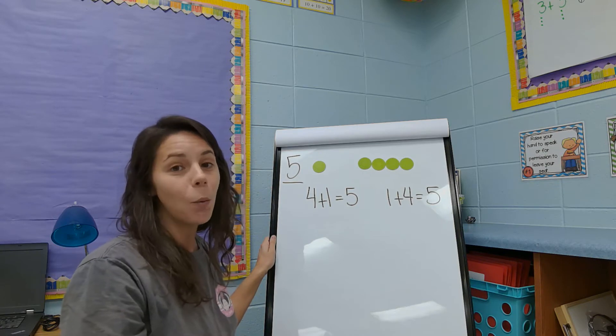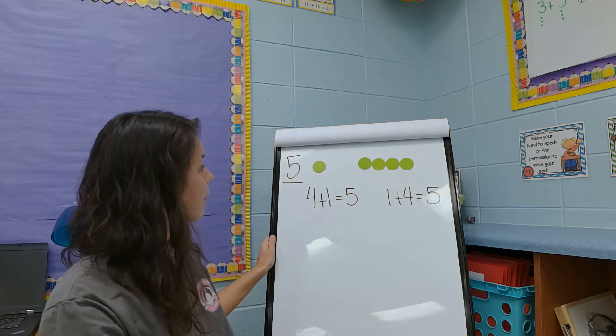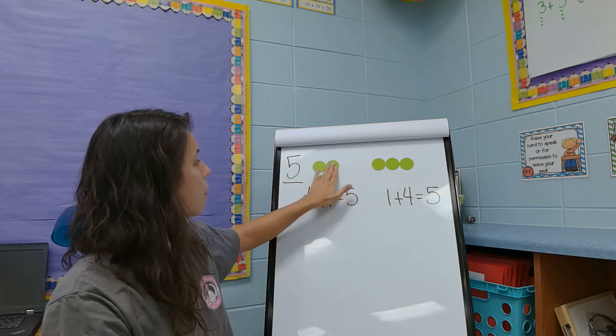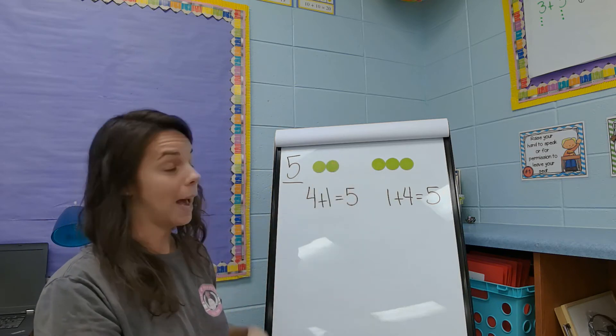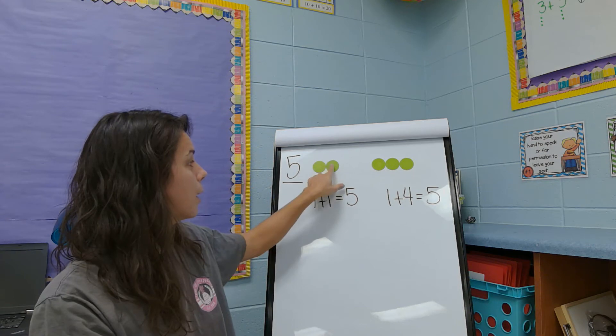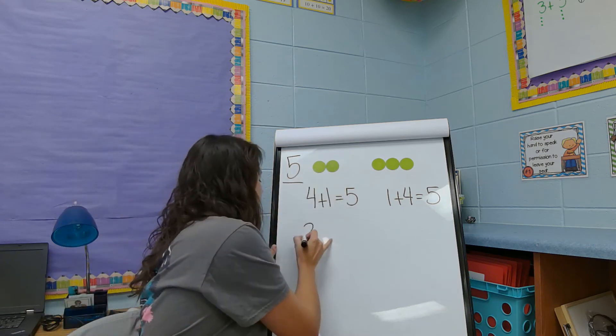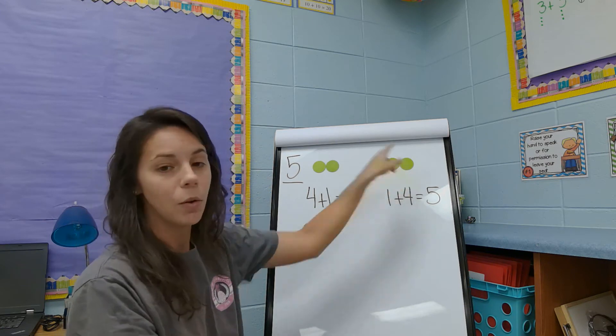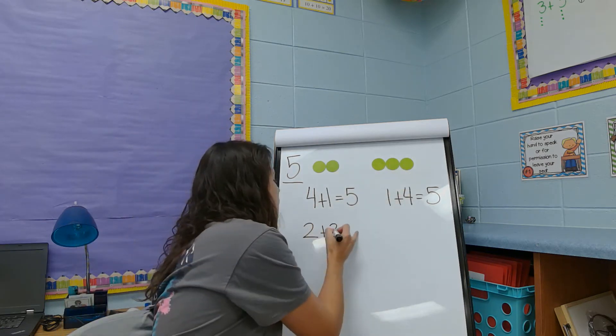Let's see what other groups we can use to make five. So what if I had pulled one over here? Now I have one, two, and one, two, three. Three dots over there.